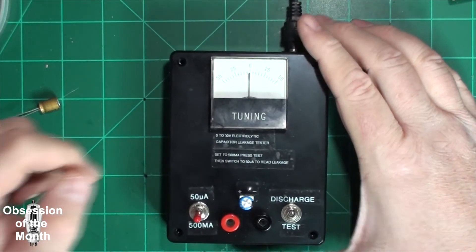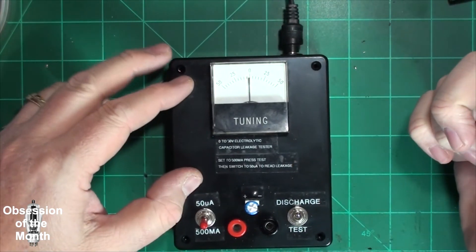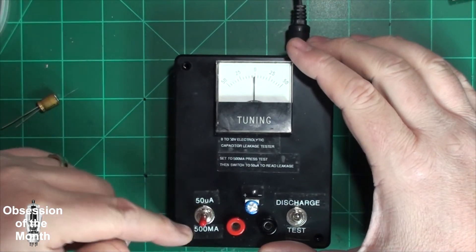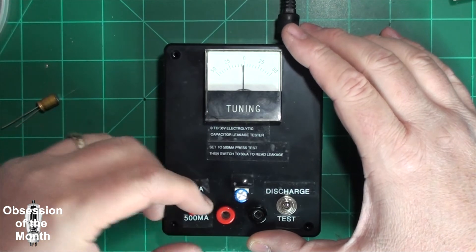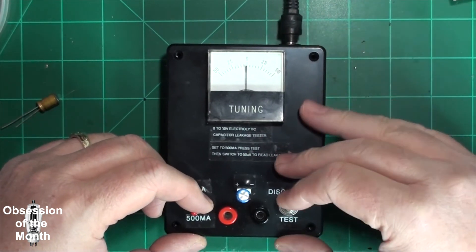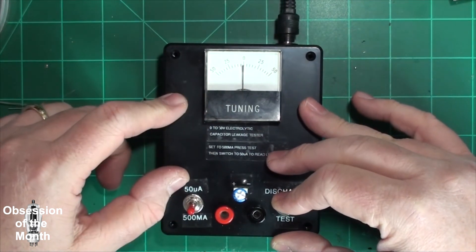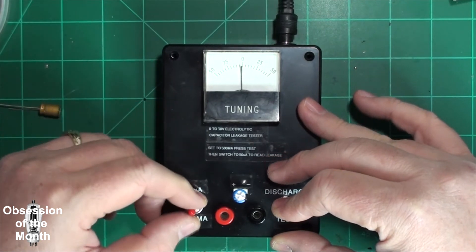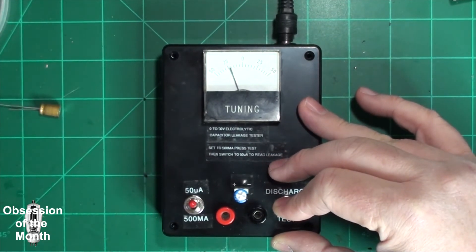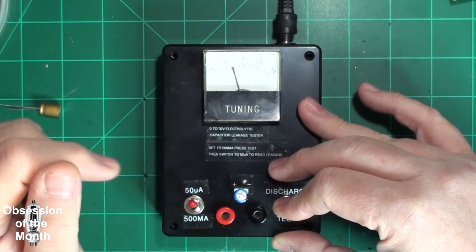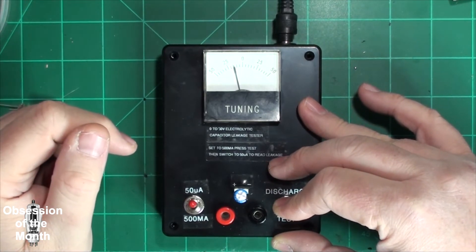So to do this, like I said we've got our voltage on. I've got this set to 500 milliamps. And then just set it to test. And you'll see the needle jump. And then you move it to 50 microamps. And it shows you if there's any leakage.